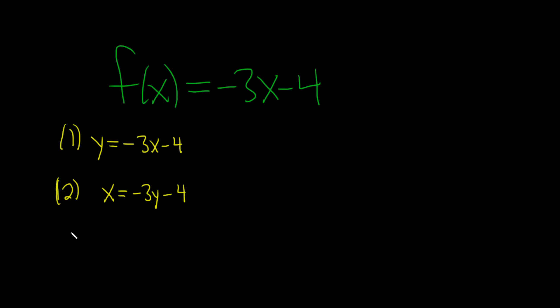And the next step would be to solve for y. This is the step that is sometimes a little bit more difficult. So what we'll do is we'll start by adding 4 to both sides. So plus 4 plus 4. This gives us x plus 4 equals negative 3y.